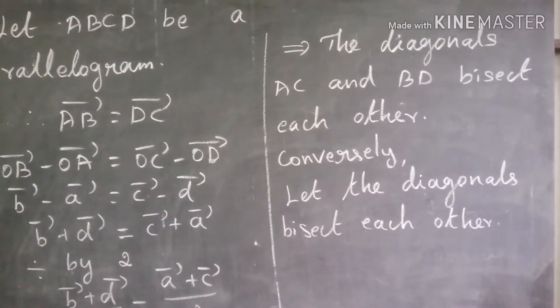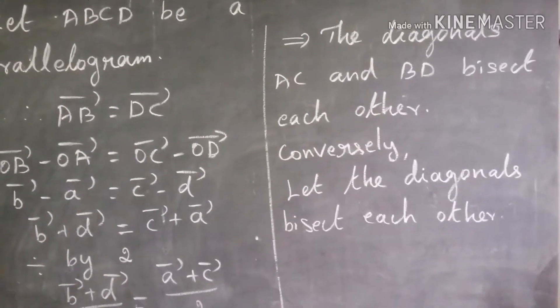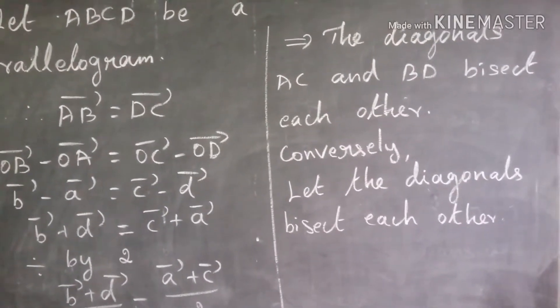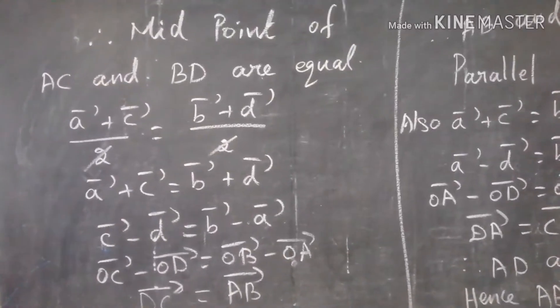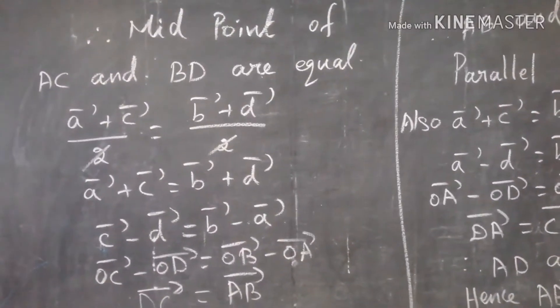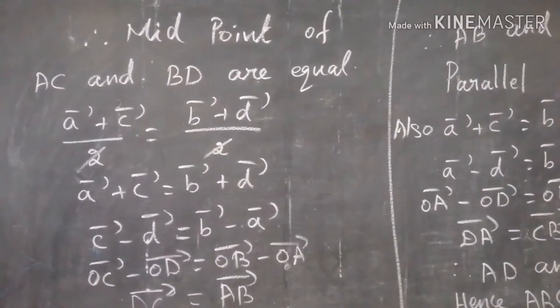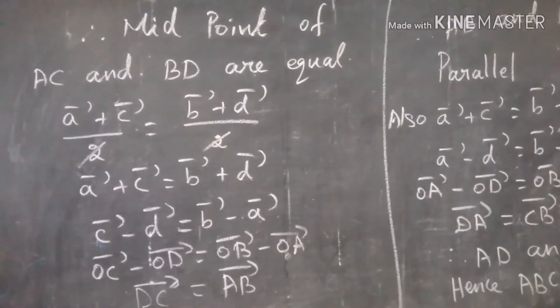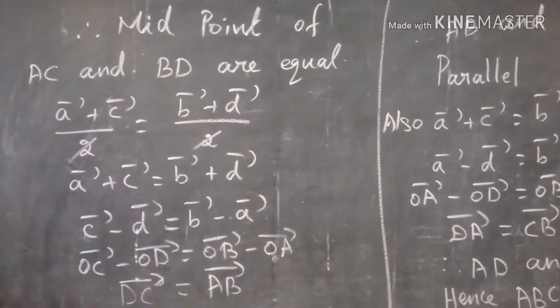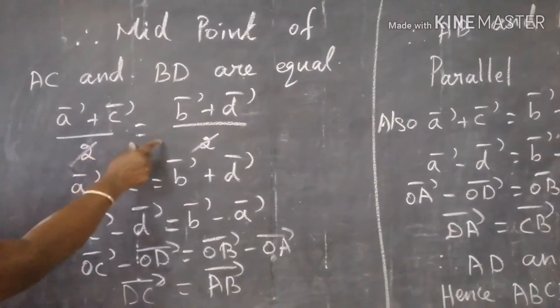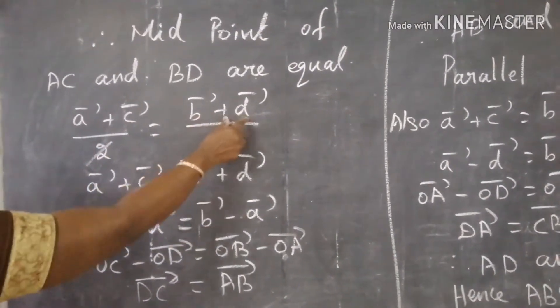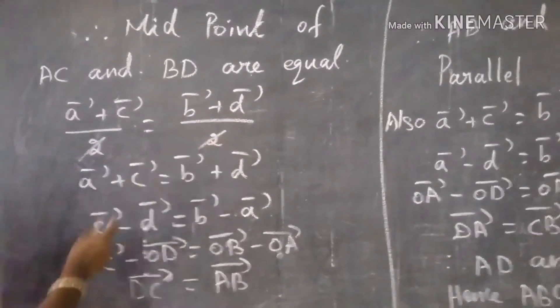Conversely, let the diagonals bisect each other. Therefore the midpoints of AC and BD are equal, that is, A plus C divided by 2 equals B plus D divided by 2.